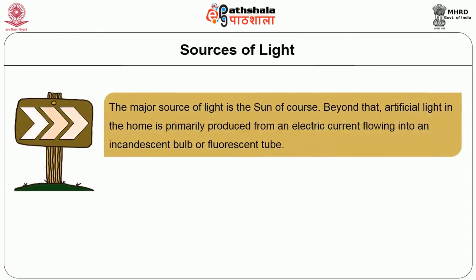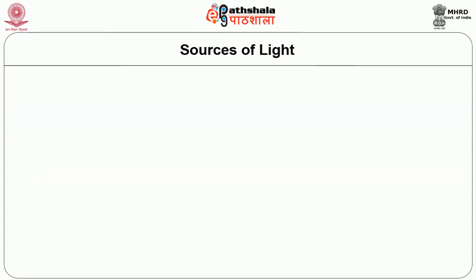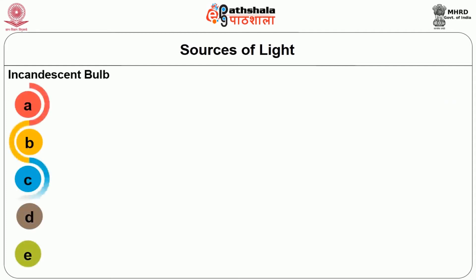The first aspect is sources of light. The major source of light is the sun. Beyond that, artificial light in the home is primarily produced from an electric current flowing into an incandescent bulb or fluorescent tube. Sunlight gives very bright light, kills germs and purifies the air; it brings out the true colours in objects, hence its significance in interiors. The two commonly used sources of artificial lighting in interiors, based on lighting elements used, are the incandescent bulb and the fluorescent tube.